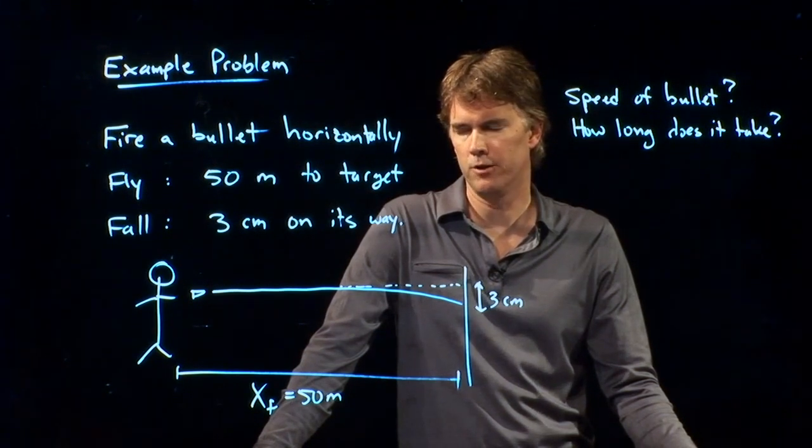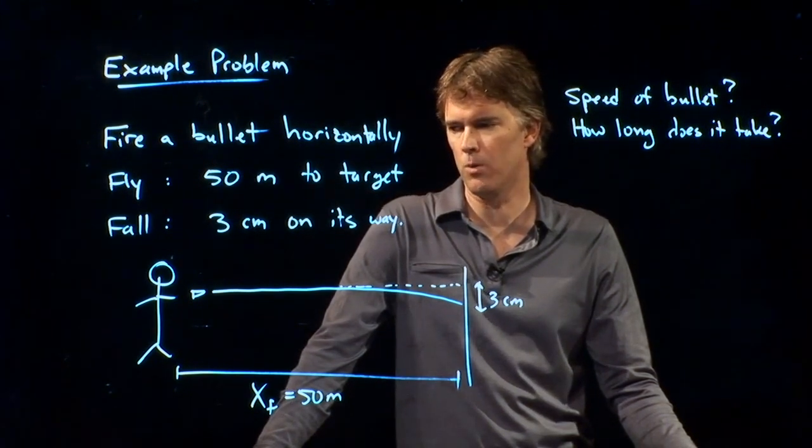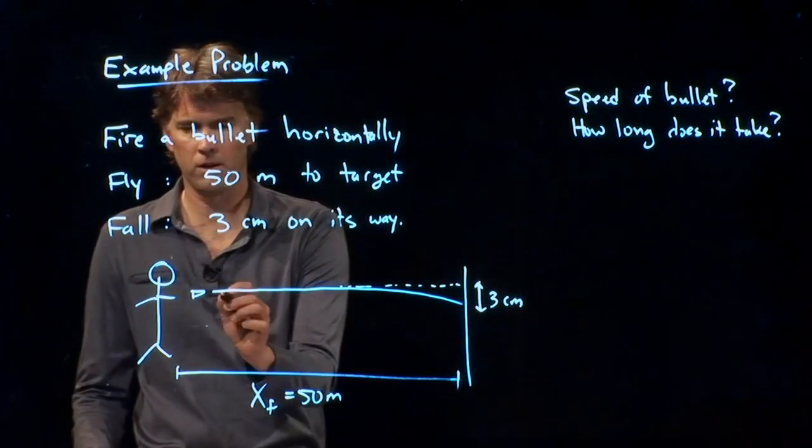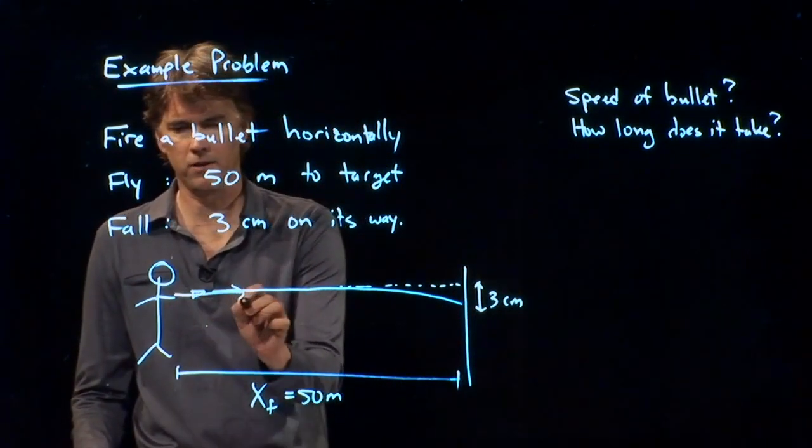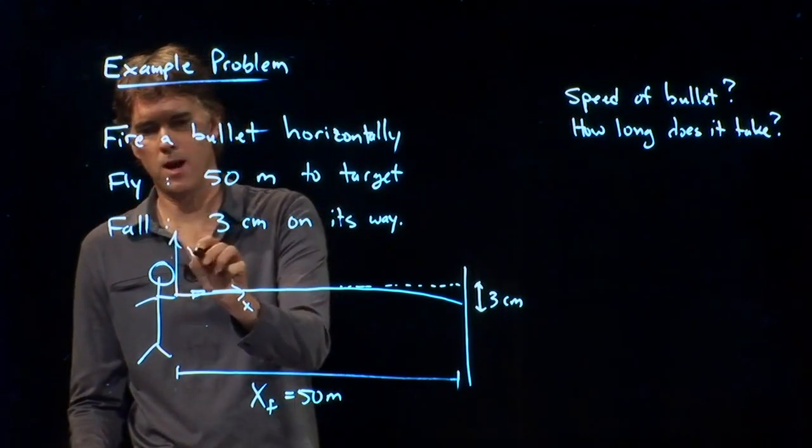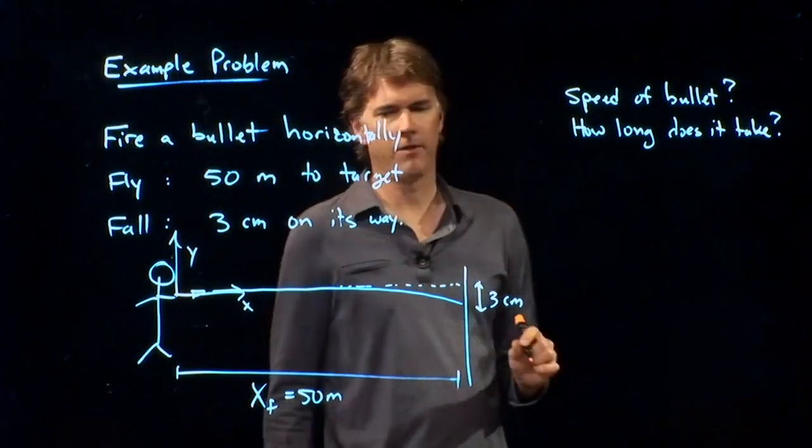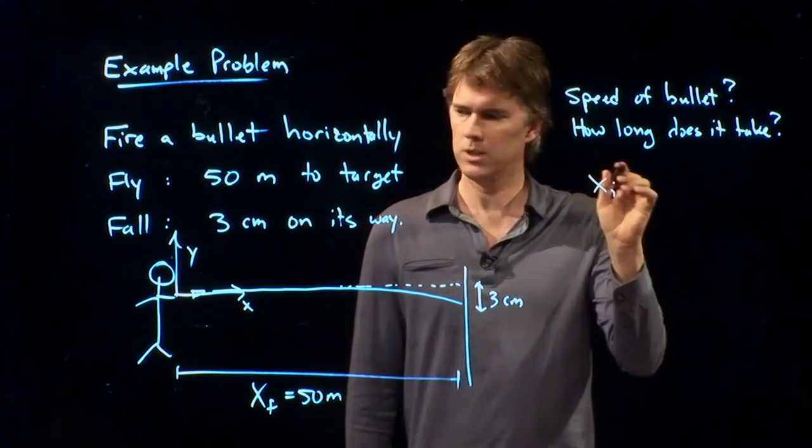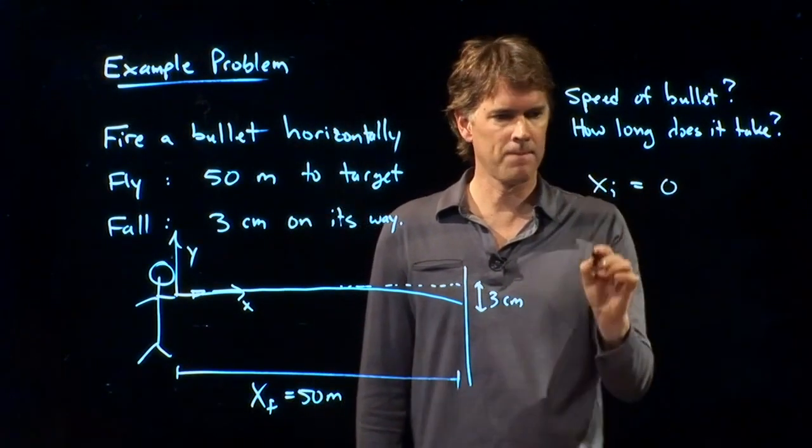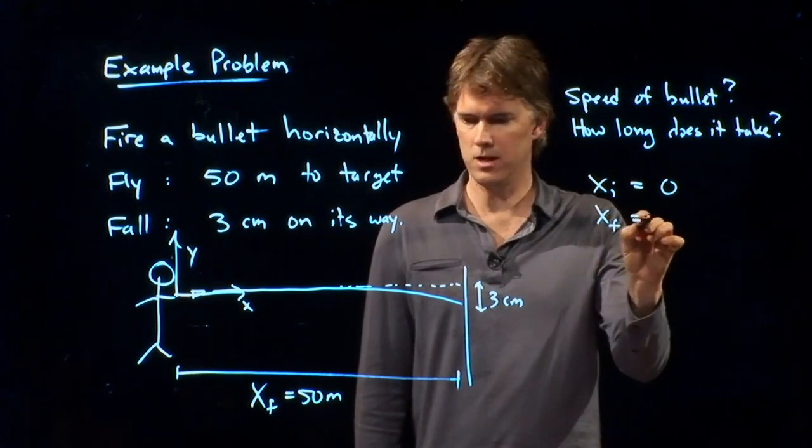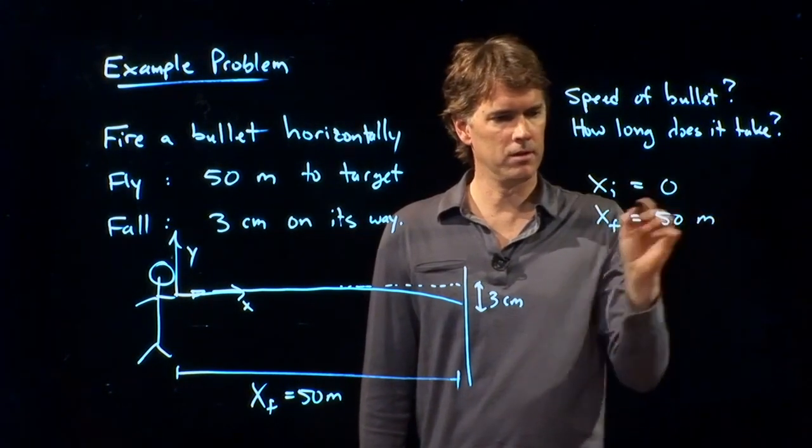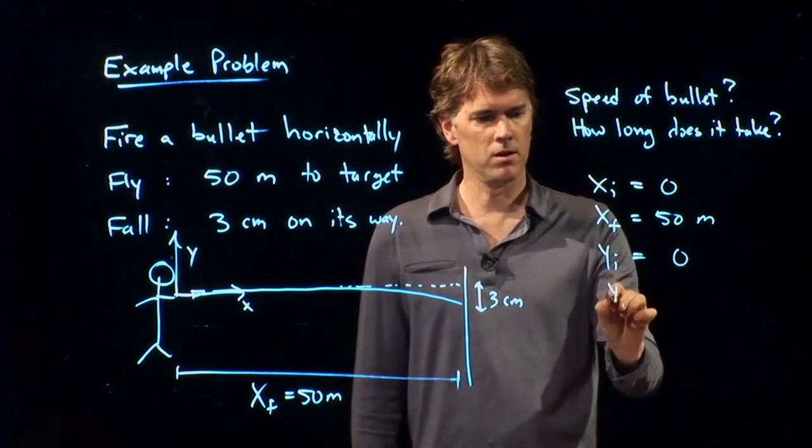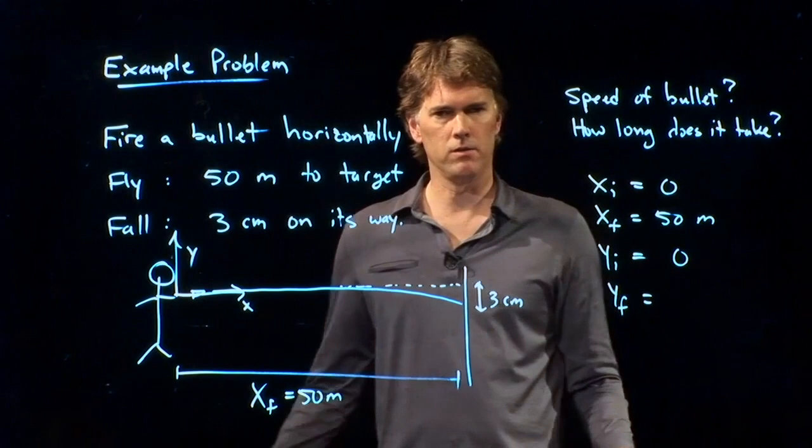So first off, we need to draw a coordinate system, and why don't we say that the coordinate system is right here. This is x, this is y, and if that is x and y, then we can say x_i = 0, x_f = 50 meters, y_i = 0.